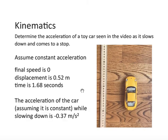And so, our final concluding statement. The acceleration of the car, assuming it is constant, while slowing down is negative 0.37 meters per second squared. Hope you enjoyed today's lesson. Have a great day. Bye-bye.